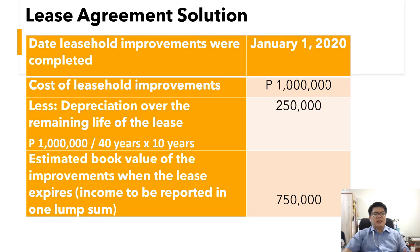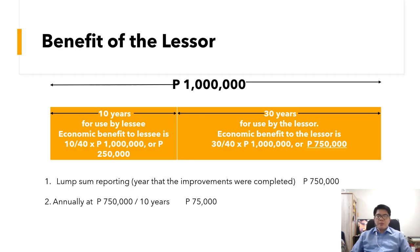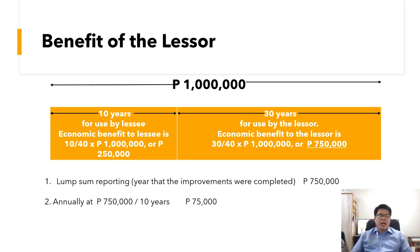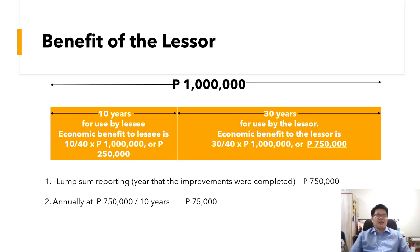To compute the lessor's income benefit: take the cost of 1 million, less the depreciation over the remaining lease term — 1 million divided by 40 years times 10 years equals 250,000. Subtracting 250,000 from 1 million gives 750,000, which is the estimated book value of the improvement when the lease expires. This 750,000 is the income to be reported. If declared as a lump sum, the lessor reports 750,000 in 2020. If declared annually over the 10-year lease term, the lessor reports 75,000 per year.